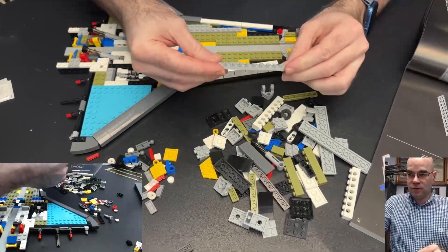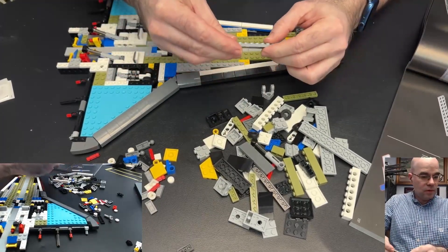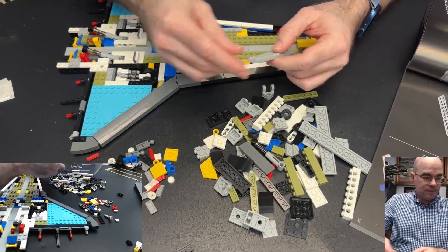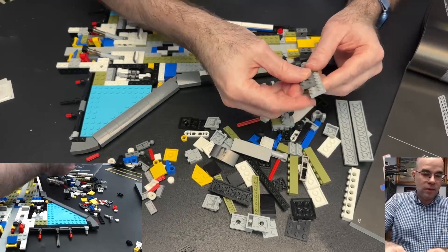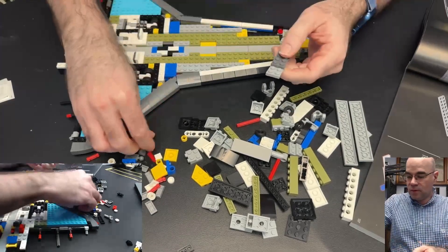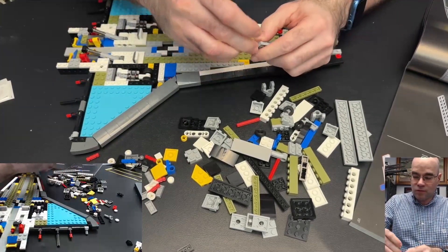Now we have something bigger to build, starting with this long gray plate and all these ball joints.